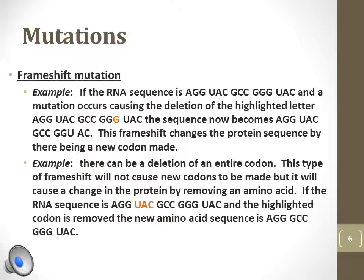Frame shift mutation occurs due to insertion or deletion of one or more nucleotides. Frame shift mutations produce erroneous protein products that are normally of shorter length due to the creation of stop codons because of the reading frame shift in the mRNA molecule.